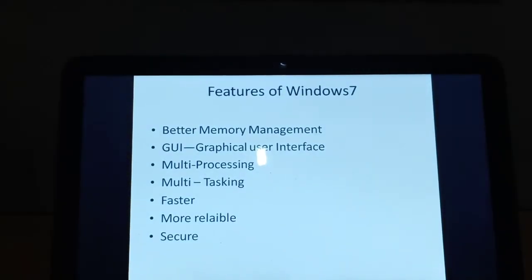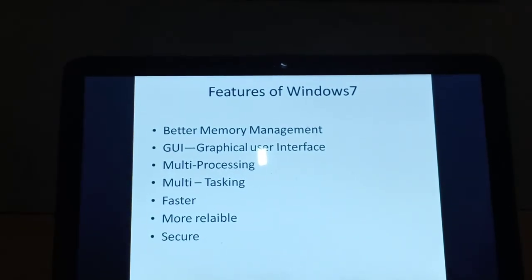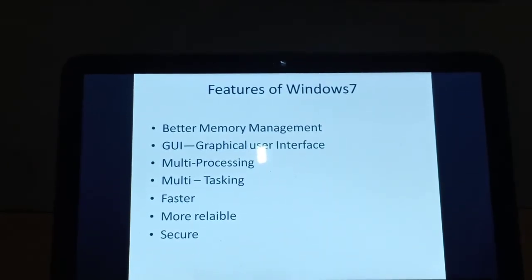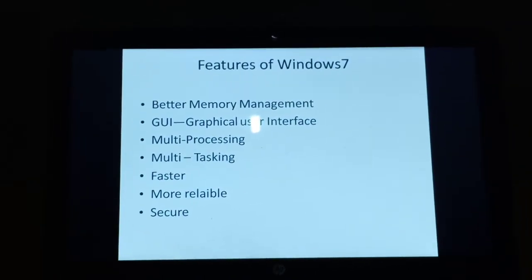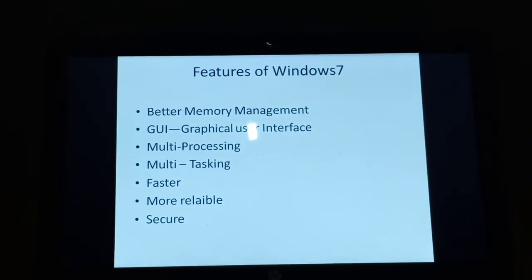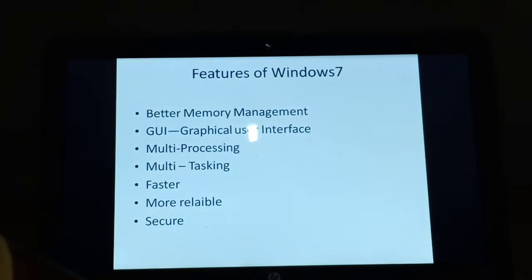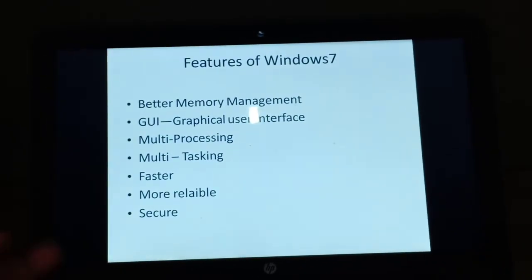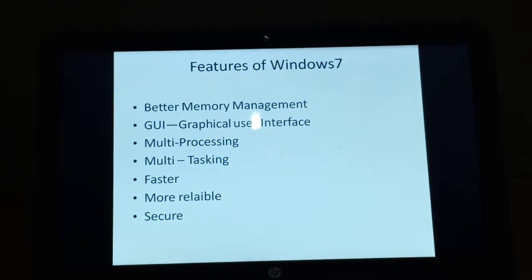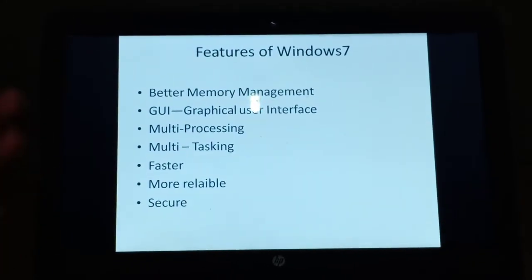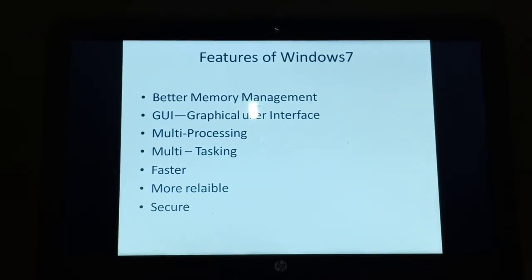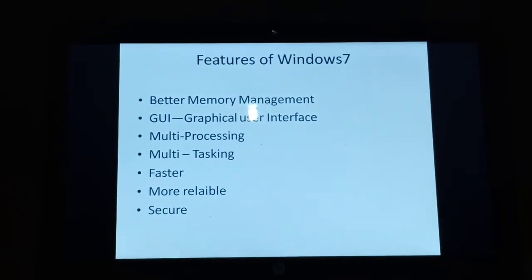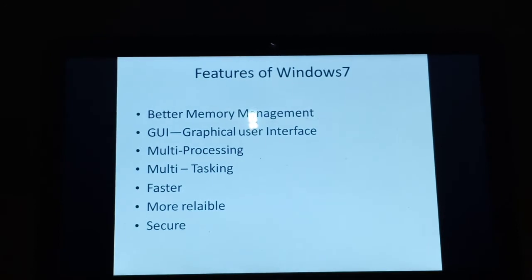I have also written in simple words what are the features of Windows 7. The features of Windows 7 are: better memory management, graphical user interface — I will explain that in the next slide — multi-processing, multi-tasking, faster, more reliable, and secure.